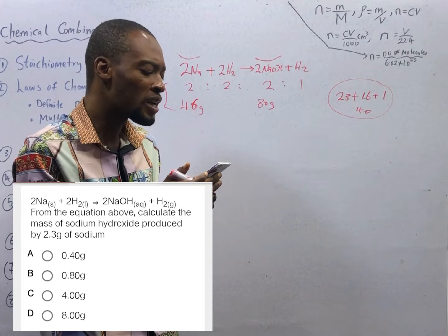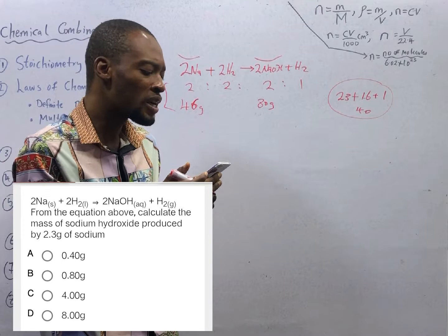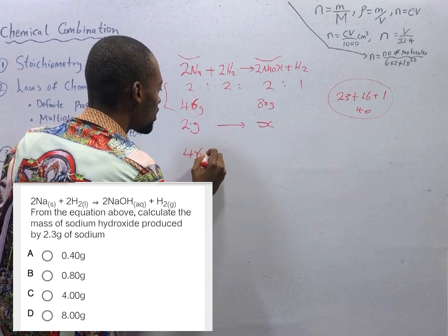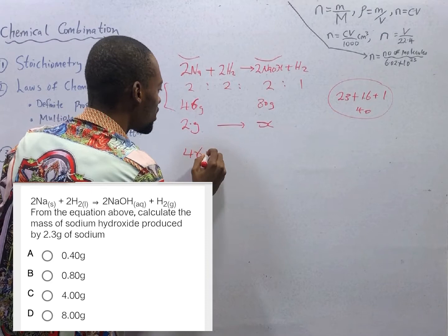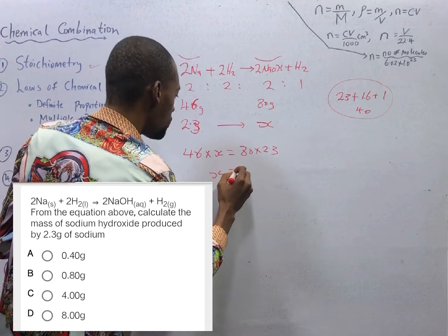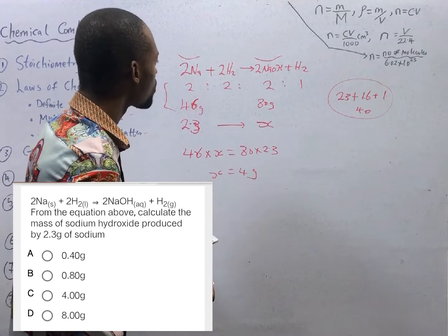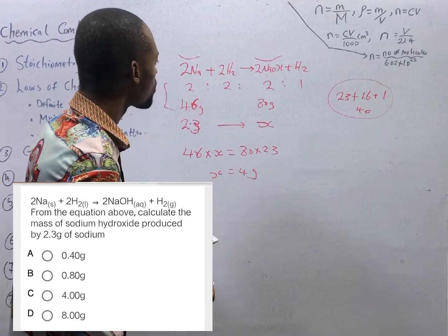We are given 2.3 grams of sodium. So 2.3 grams of sodium will produce S. Cross multiplying: 46 times S equals 2.3 times 80. S will simply be 4 grams. The mass of sodium hydroxide produced by 2.3 grams of sodium is 4 grams.